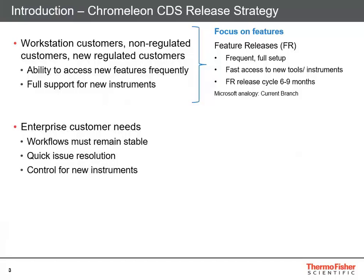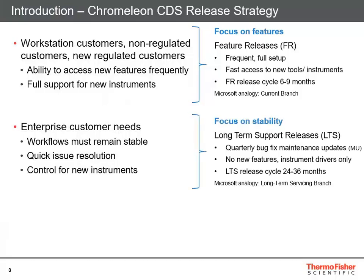Feature releases come out on a six to nine month cycle. Using the Microsoft Windows analogy, this would be what we call their current branch. Whereas our enterprise customers want long-term stability — a focus on stability.